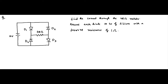Here we are with another question on diode circuits. This is the circuit here and we are given the information that the diodes connected in this circuit are silicon diodes with a forward resistance of 1 ohm. We have to find out the current flowing through the 48 ohm resistor — this current.